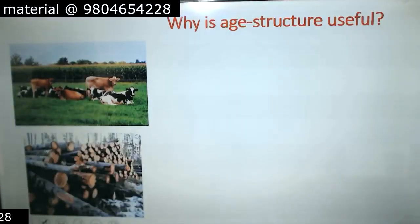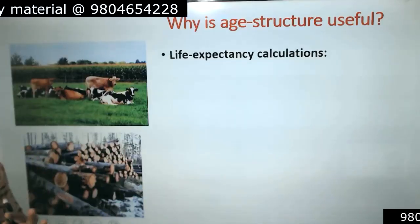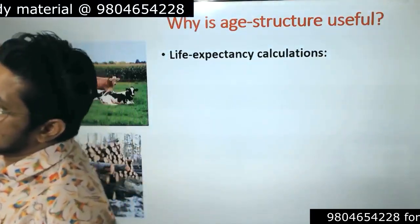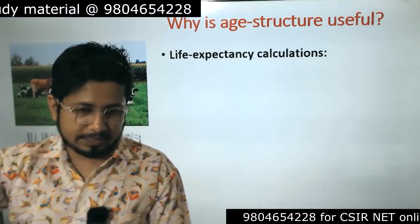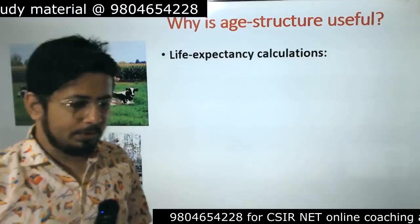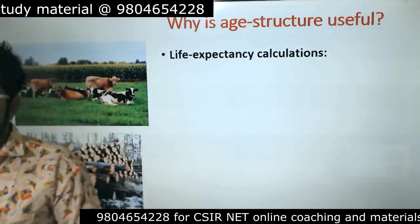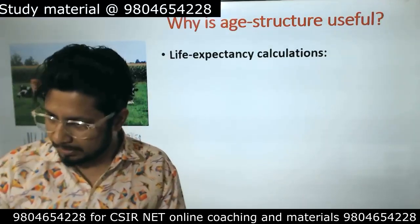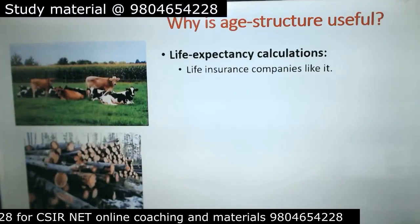Why are these structures useful? First, life expectancy calculations — from life tables we can calculate the life expectancy of organisms. These life tables give us an idea about the type of survivorship curve, whether it's Type 1, 2, or 3, and based on that we can characterize the organism. If it's Type 1, we know they are larger organisms, they produce fewer offspring, they give more parental care, their reproductive age comes later, and their offspring are also bigger in size.